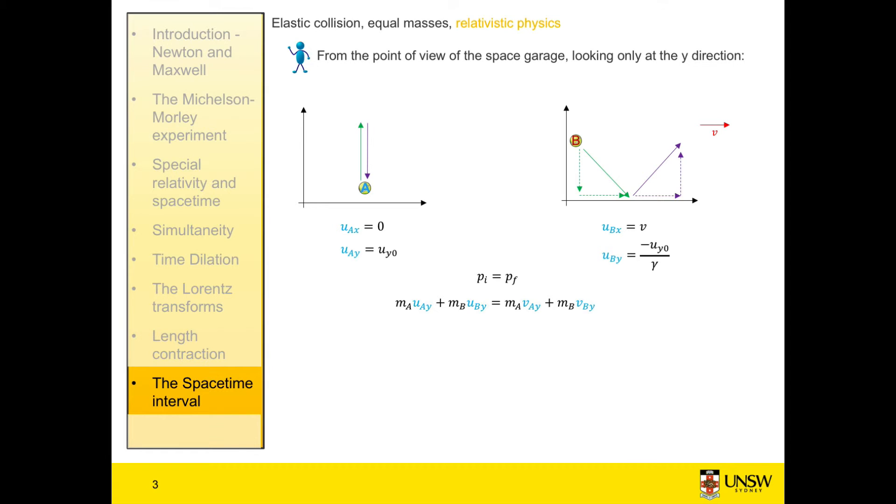We know that the two masses, the two tennis balls measured in their rest reference frame, the rest mass of both balls is the same. But we don't know yet if anything happens to these masses moving at relativistic speeds. So I've written the masses as m_a and m_b. Those are the two masses of the balls as measured from the reference frame of the space mechanic.